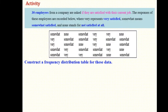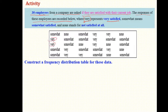Now let's do another example. 30 employees from a company are asked if they are satisfied with their current job. The responses are recorded. 'Very' represents very satisfied, 'somewhat' means somewhat satisfied, and 'none' stands for not satisfied at all. We want to construct a frequency table for this data.